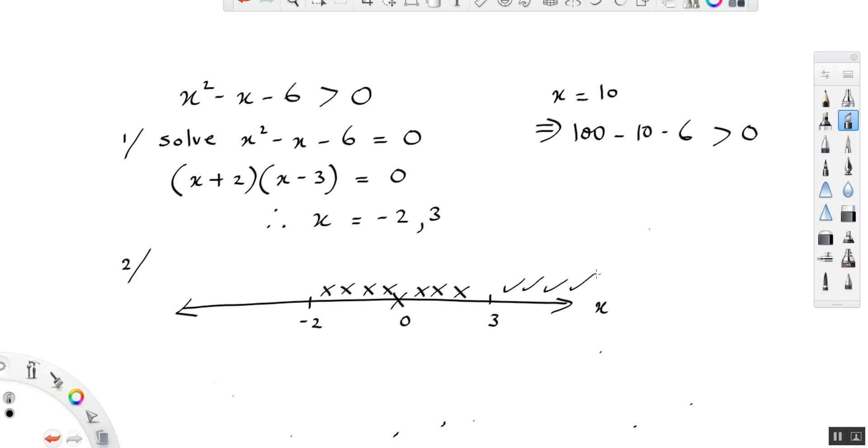Now, the other region was that region less than minus 2. So let's take a value, an easy one. Let's take minus 10. That's clearly below minus 2, and we'll test that.